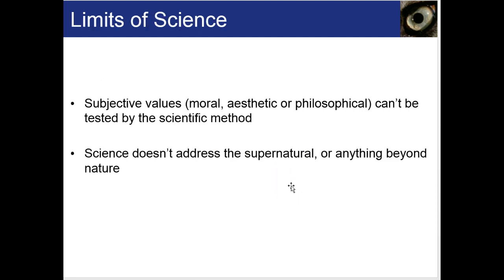A scientific theory is a hypothesis that has not been disproven after many, many years of rigorous testing, with much evidence and data gathered in support. A law of nature is a big generalization that describes a consistent natural phenomenon for which there is incomplete scientific explanation — such as the laws of thermodynamics, laws of planetary motion, and Newton's laws of motion. Subjective values like morals and beliefs can't be tested by the scientific method, and science doesn't address the supernatural or anything beyond nature.